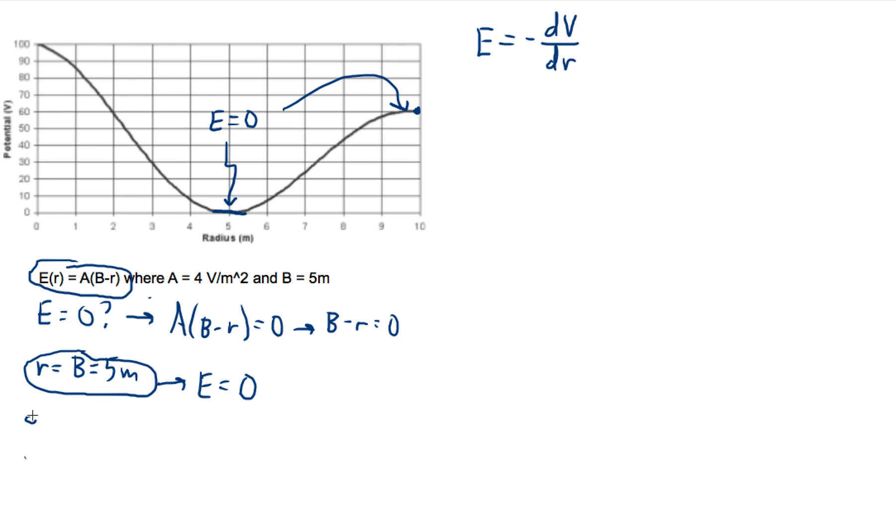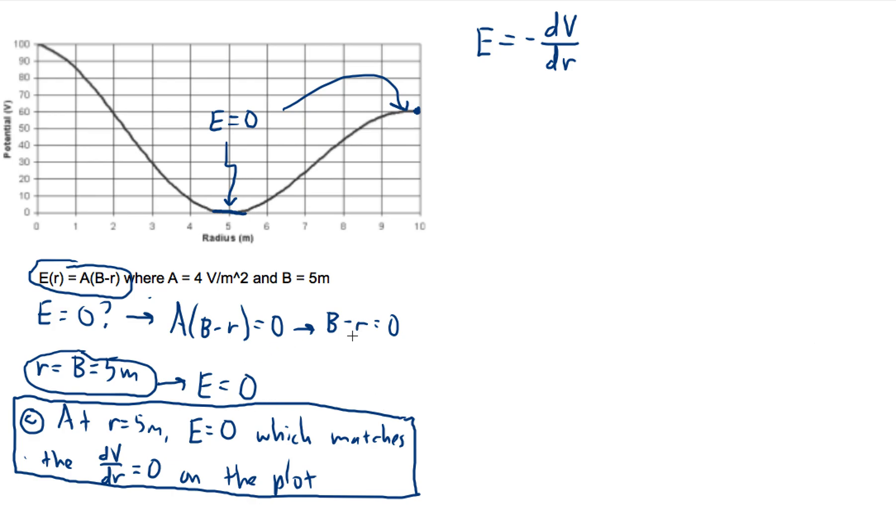So the answer to part C is one feature of this equation. You can say at R equals five meters, E equals zero, which matches the dV dr equals zero on the plot. And that is a feature of the equation. It's been justified. That's, in my opinion, that's the easiest one to go for.